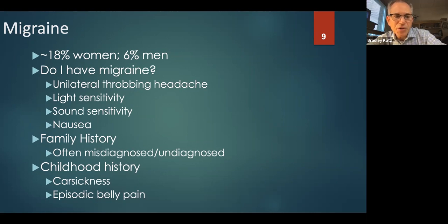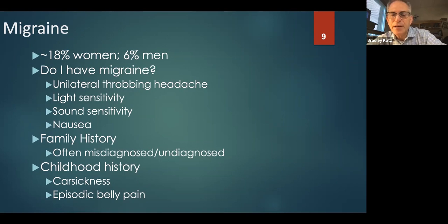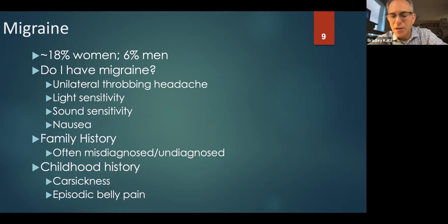Sometimes there's a childhood history of car sickness or unexplained episodic belly pain. These are sometimes thought to be a childhood manifestation of migraine that in adulthood presents more as a typical headache. Some people call this episodic belly pain an abdominal migraine, where the visceral nervous system somehow gets caught up in the migraine pathophysiology.